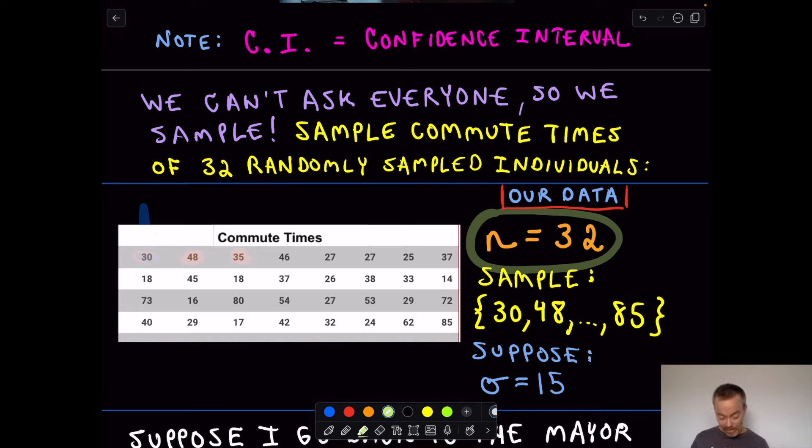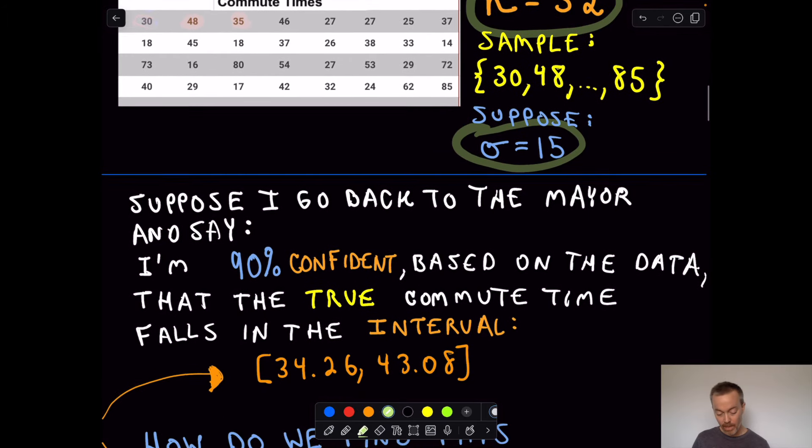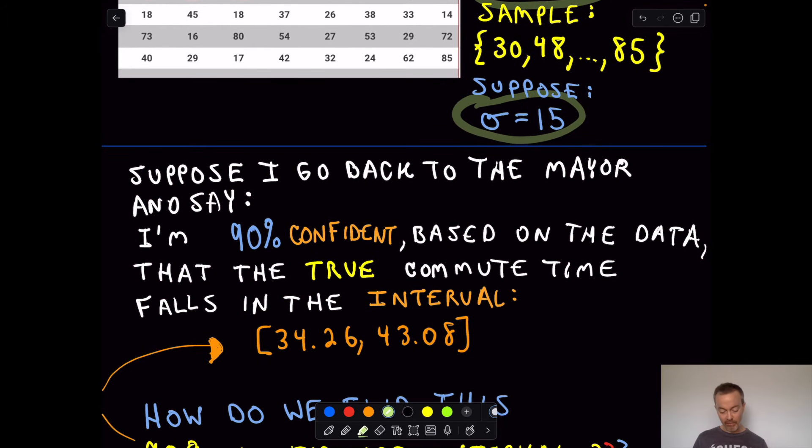So, okay, I've got my commute times. Suppose in the past that this had been done as well, this experiment. And suppose we know that the standard deviation is equal to 15. So a standard deviation of 15 minutes in regards to commute times. So suppose I call up the mayor and I say, Hey, mayor, I got some information for you.